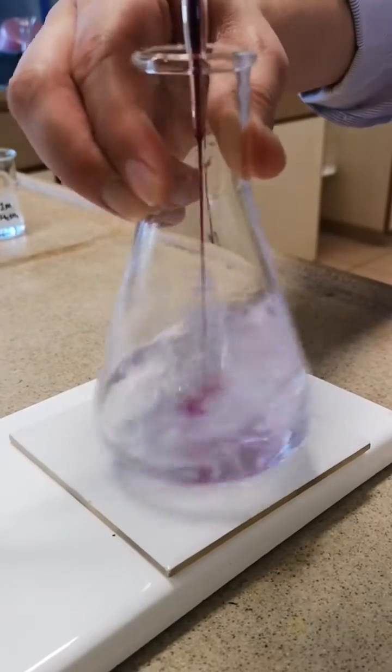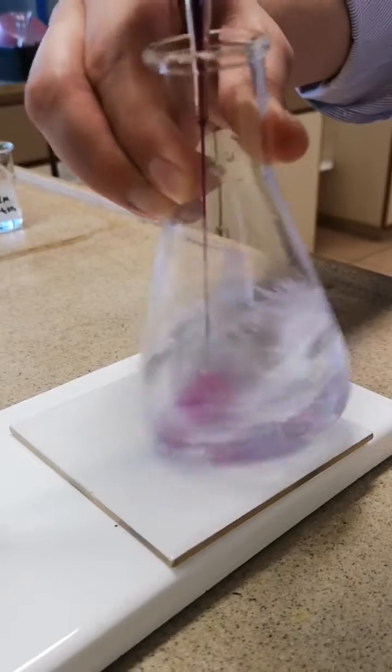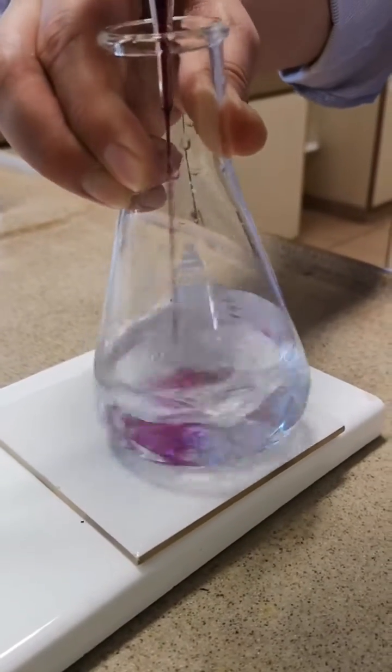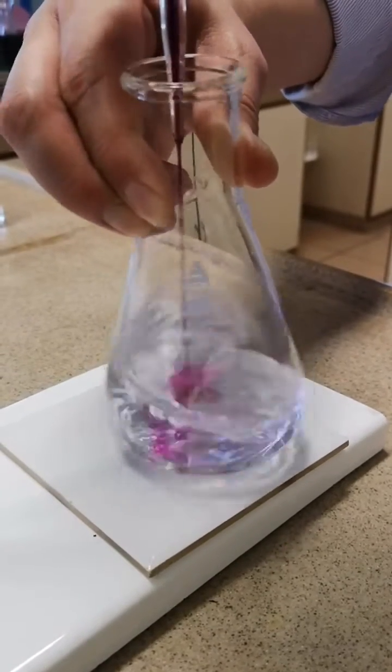We can continue to let the burette run. As you can see, the pink color decolorizes quite rapidly, and that means that we are still very far away from the end point. You should start adding dropwise near the end point when the pink color takes much significantly longer to decolorize.